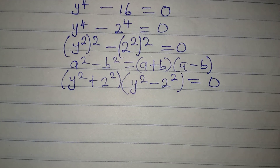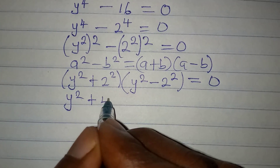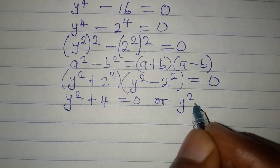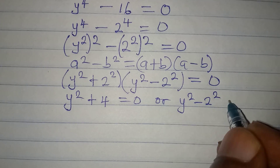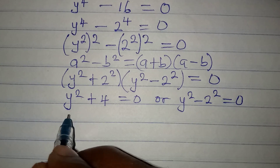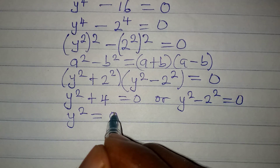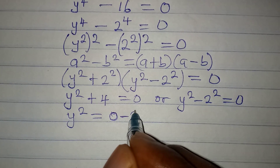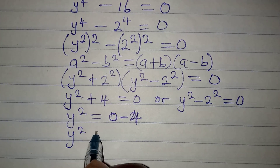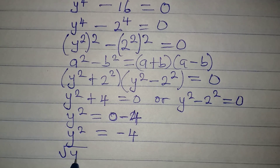From here we can apply the zero product property, so y squared plus 2 squared — here 2 squared gives 4 — equals 0, or y squared minus 2 squared equals 0. Let me deal with the first case: y squared plus 4 equals 0, so y squared equals 0 minus 4.